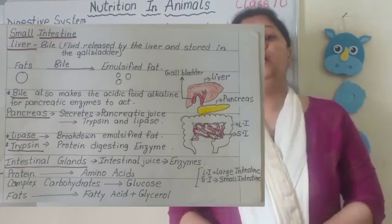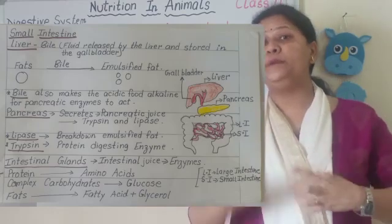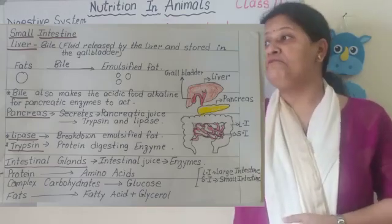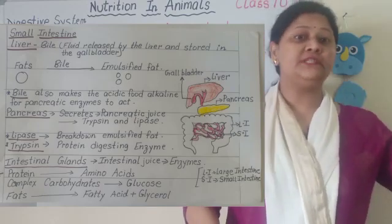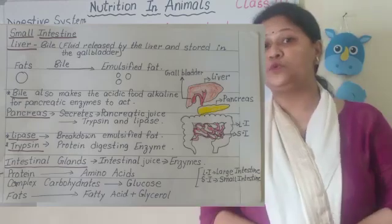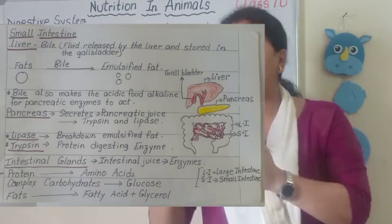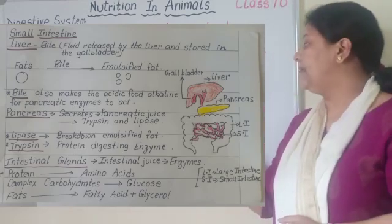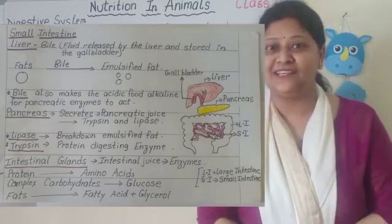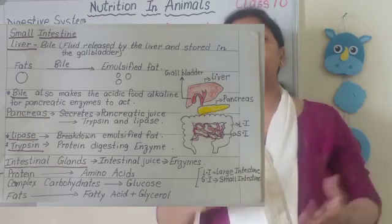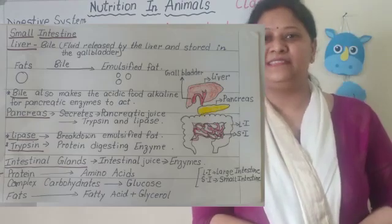Lipase ka kya kaam hai — hum ne dekha bile kya karta hai: emulsification of fat, fat ko emulsified fat mein convert kiya. Ab is emulsified fat ko further breakdown kerne ke liye lipase use hota hai. Ab hum ne dekha ki medium ko bile alkaline karta hai ta ki trypsin — jo ki enzyme hai pancreatic juice mein — alkaline medium mein hi protein ka digestion karta hai. It can also be asked: what is the difference between pepsin and trypsin? Because both are protein-digesting enzymes.